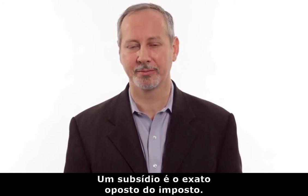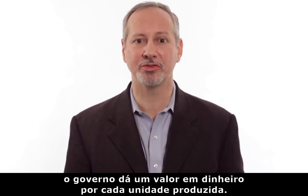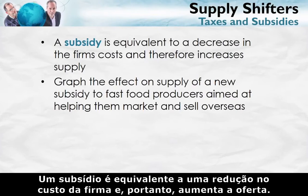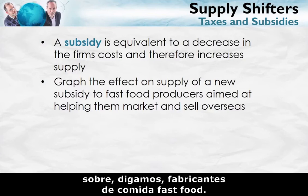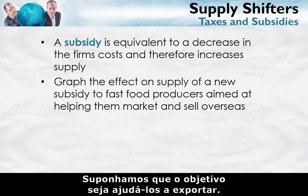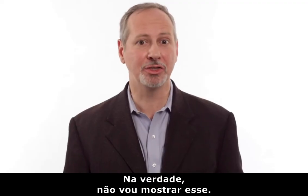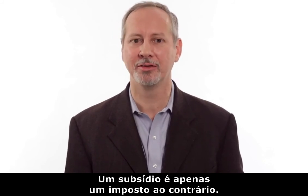What about a subsidy? A subsidy is just the opposite of a tax. Instead of the government taking money with every unit produced, the government gives some amount of money for every unit produced. A subsidy is equivalent to a decrease in the firm's costs, and therefore it increases supply. Try graphing the effect of a subsidy on the supply curve for fast food producers — if you have trouble, go back and look at the tax example. A subsidy is just a tax in reverse.